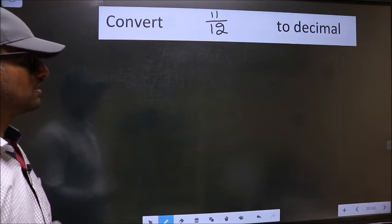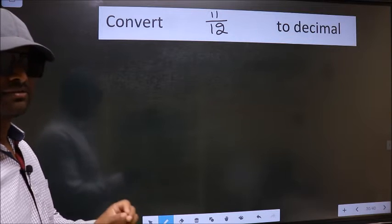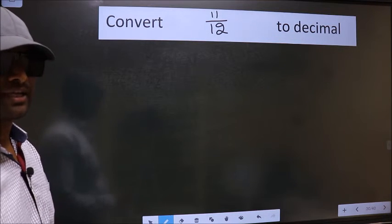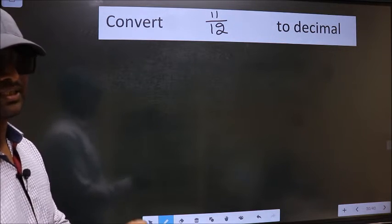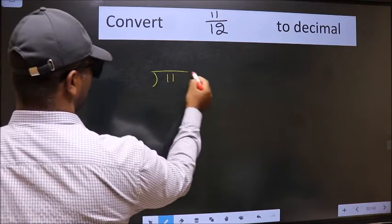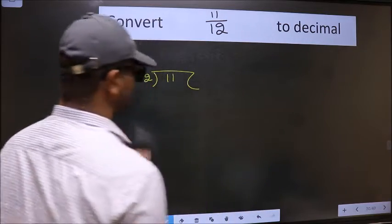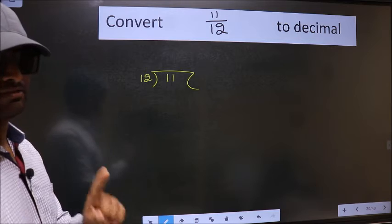Convert 11 by 12 to decimal. To convert to decimal we have to divide, and to divide we should frame it in this way: 11 here and 12 here. This is your step 1.